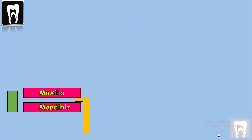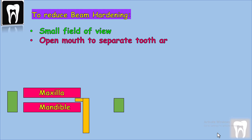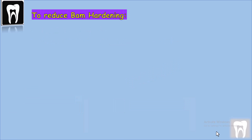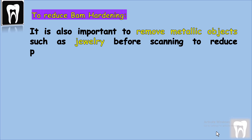To reduce beam hardening artifacts, we can reduce the field size, modify the patient positioning, or separate the dental arch to avoid scanning regions containing metallic objects like dental implants or restorations. It is also important to remove metallic objects like jewelry before scanning, to reduce the peripheral beam hardening effect that can be superimposed on the region of interest being imaged.